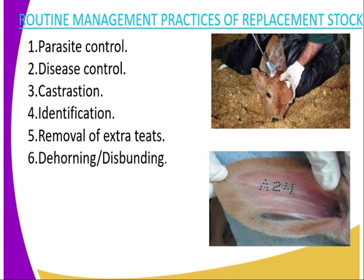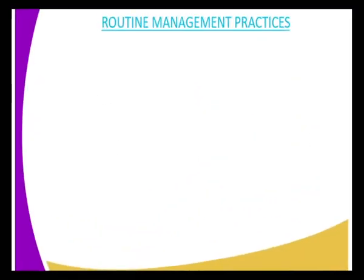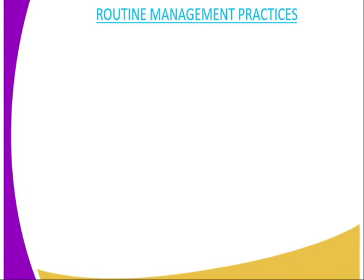Then we have honing and disbudding. Honing, as I explained in the previous lesson, is the act of cutting a grown horn. Disbudding is the act of removing the horn bud, and these are both routine management practices.